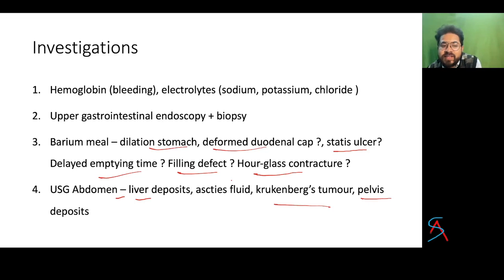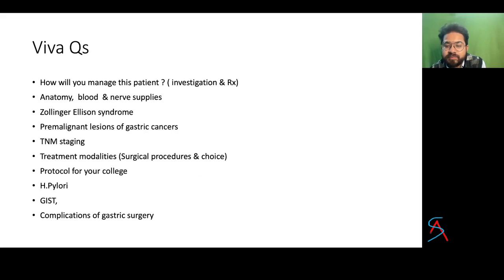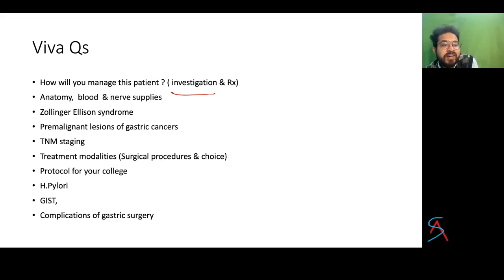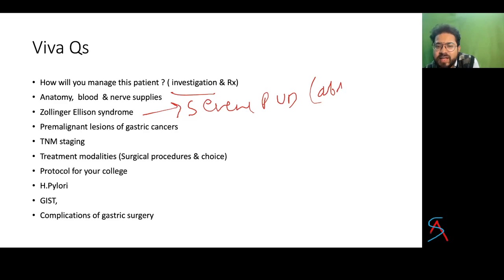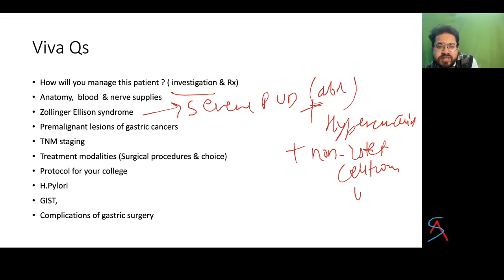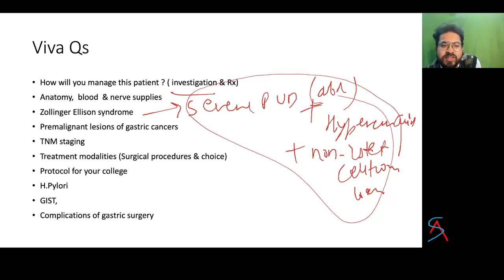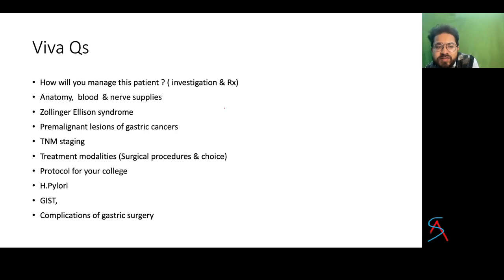Barium meal findings include deformed duodenal cap, stasis, delayed emptying time, filling defect, and R-class contracture. Ultrasound can reveal liver metastasis, ascitic fluid, Krukenberg tumor (metastasis to ovary), and pelvis deposits. Common viva questions: further investigations, management, types of surgery, anatomy and blood supply of the stomach, length of GI tract. Zollinger-Ellison syndrome involves severe peptic ulcer disease with abdominal pain, hypersecretion of acid, and a non-islet cell tumor of the pancreas.